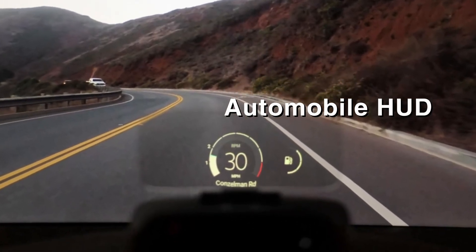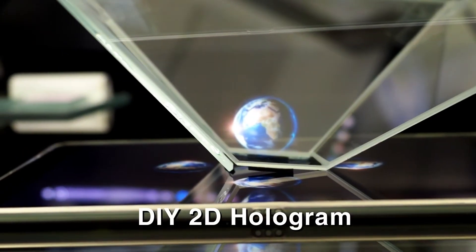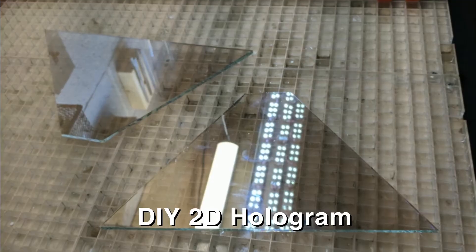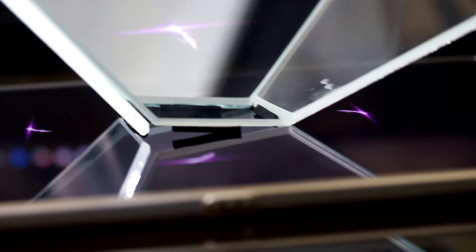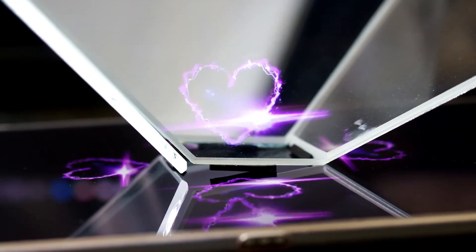A DIY hologram pyramid, a simple device with trapezoidal shaped beam splitter mirror, creates a 3D-like illusion, making an image or video appear as if it were in mid-air.